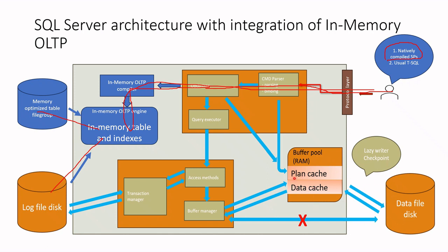If you want to access both in-memory OLTP and on-disk tables at the same time, there is a solution — you should use T-SQL. There is a component called query interop, which extracts data from the in-memory OLTP engine to access methods. As a result, access methods can get data from both the buffer pool and in-memory OLTP. However, if you do not use on-disk tables in your query and use only in-memory OLTP, you had better use natively compiled stored procedures.